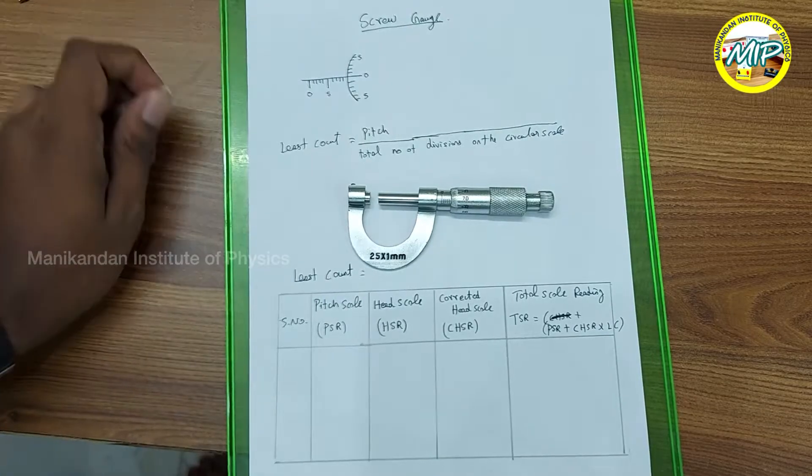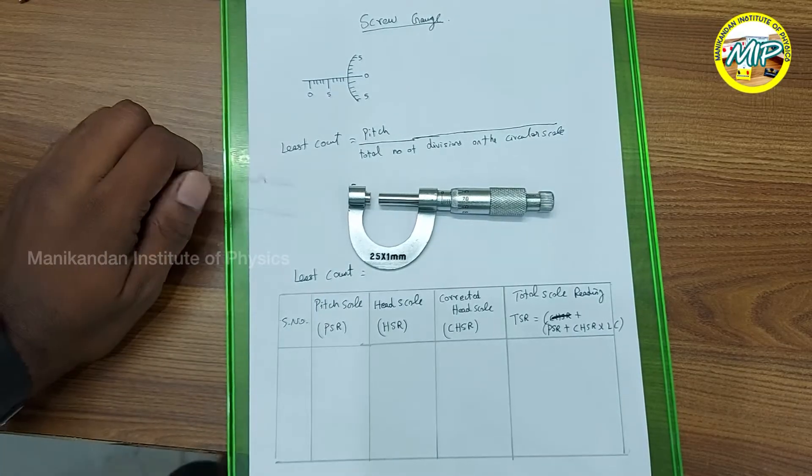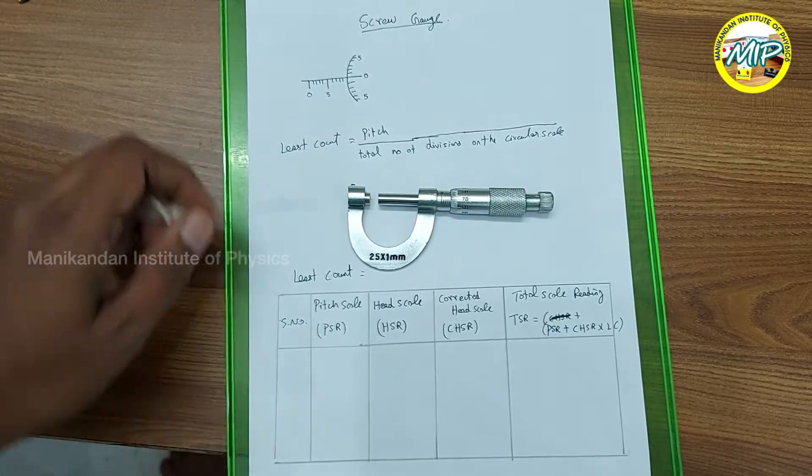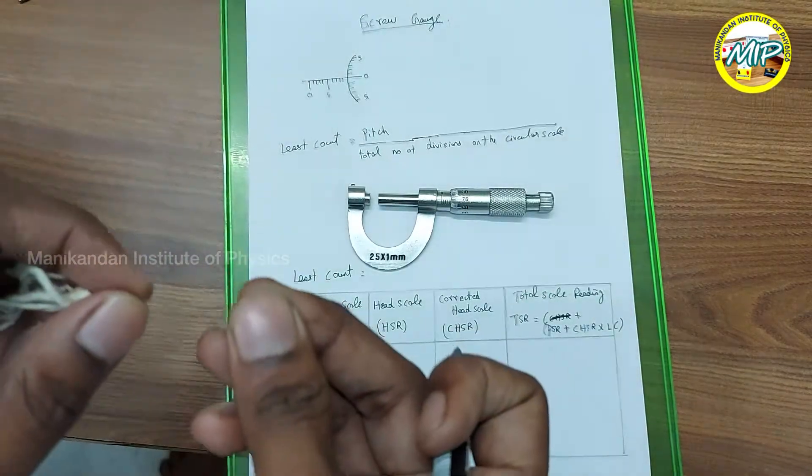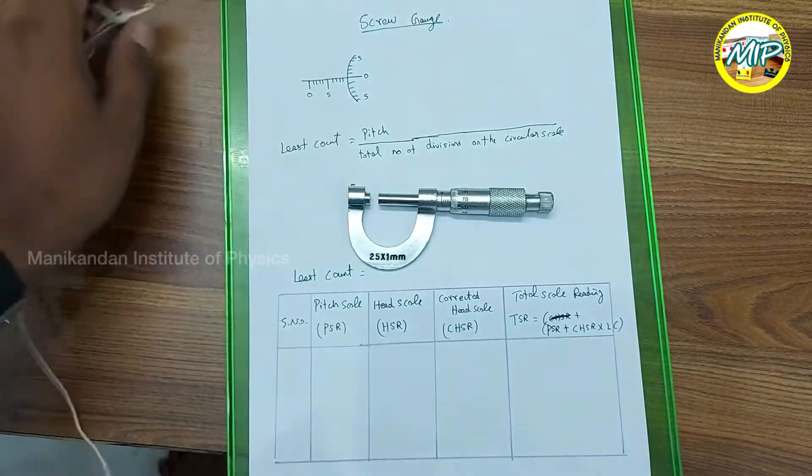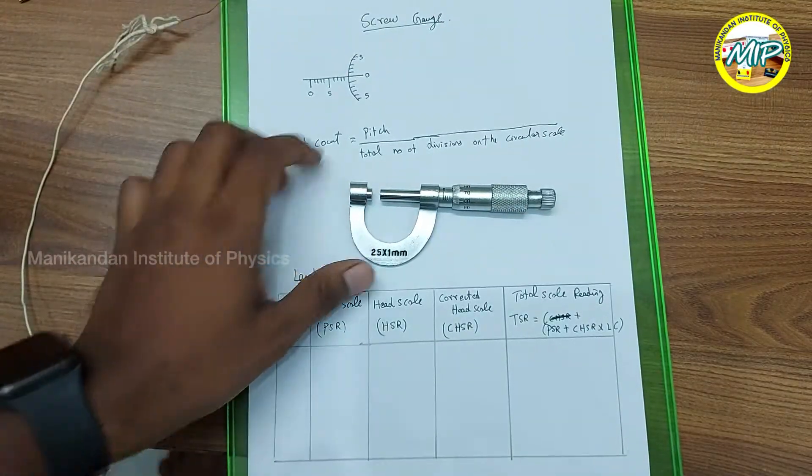Hi students, today I am going to explain how to determine the radius of the given wire using screw gauge.